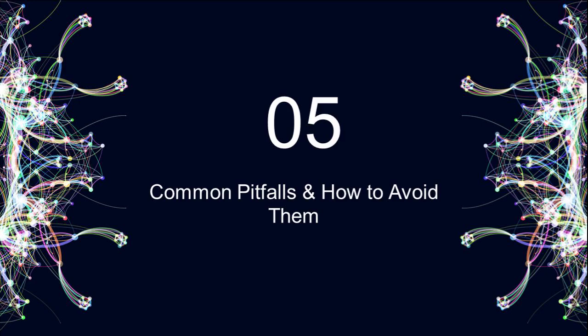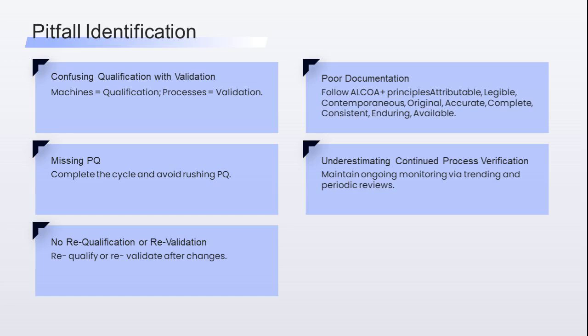Let's look at common mistakes and how to avoid them. Confusing qualification and validation: make a simple rule — machines equal qualification, processes equal validation. Keep that clear to stay compliant. Missing PQ: some firms skip or rush performance qualification; auditors flag this fast. Always complete IQ, OQ, PQ fully. No requalification or revalidation: when you move equipment or tweak processes, remember you may need to requalify or revalidate.